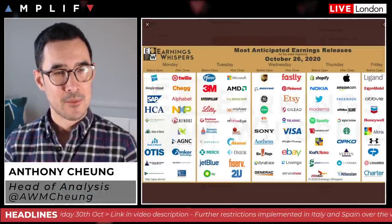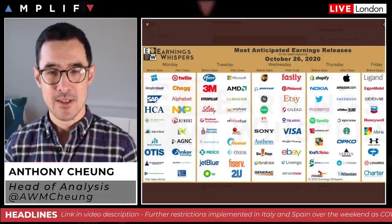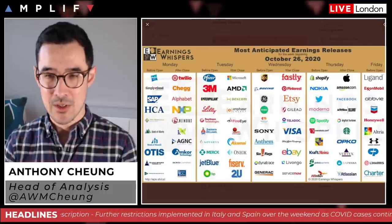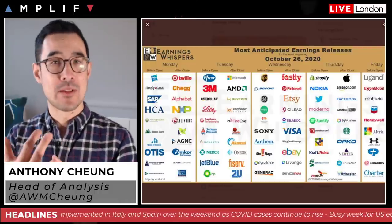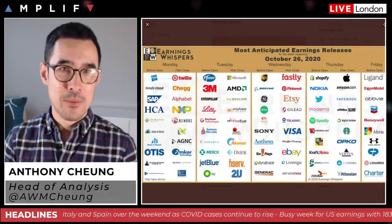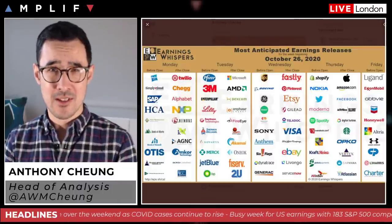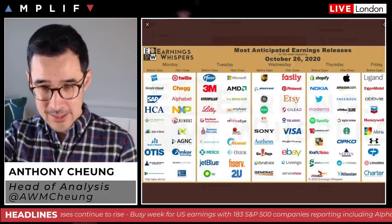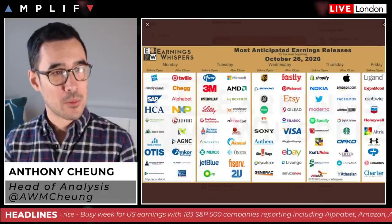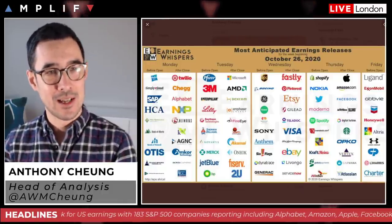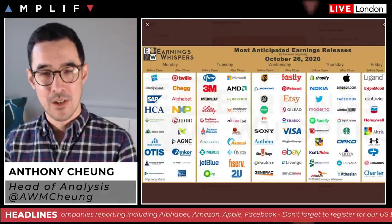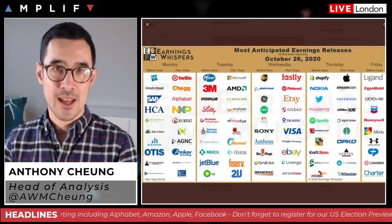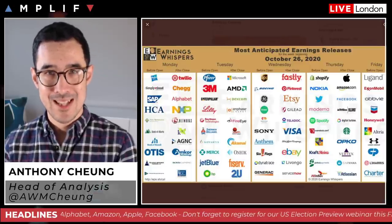Talking about earnings, this week is super busy. US earnings-wise we've got 183 S&P 500 companies reporting, including 10 of the 30 Dow components. Alphabet, Amazon, Apple, and Facebook — the big mega-cap tech names — are all reporting on Thursday after the close. Other highlights include Pfizer, 3M, Caterpillar, Eli Lilly, Boeing, and GE premarket tomorrow; UPS on Wednesday; and Exxon and Chevron premarket on Friday. So a big earnings week ahead, particularly Thursday night for those big tech names.